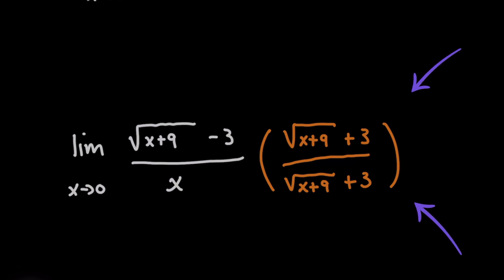And the reason why we're doing this is because now if you look at the numerator, you've got the square root of x plus nine minus three times the square root of x plus nine plus three. So that looks very similar to an expression a minus b times a plus b, right? Well, if you remember, those are the factors when you have something like a squared minus b squared.